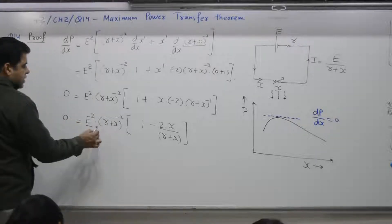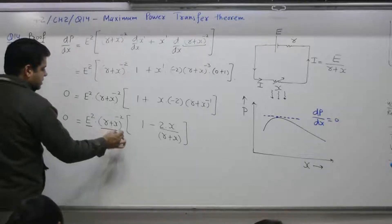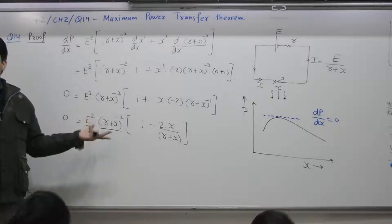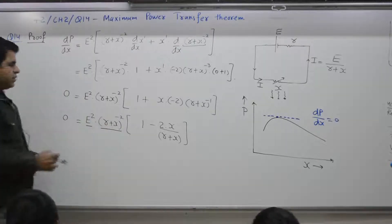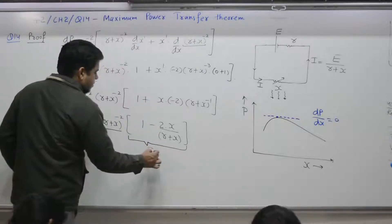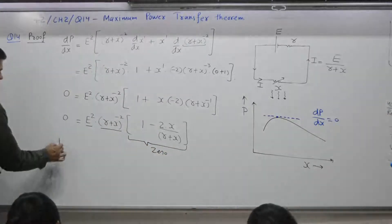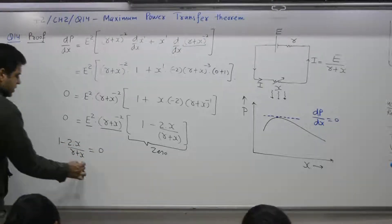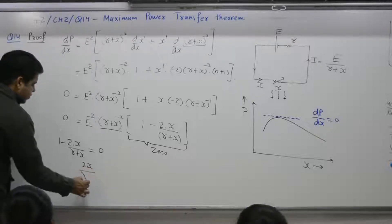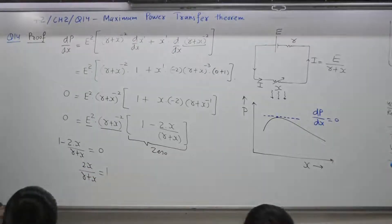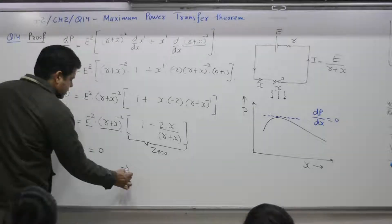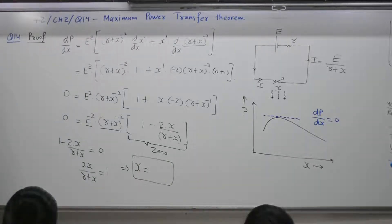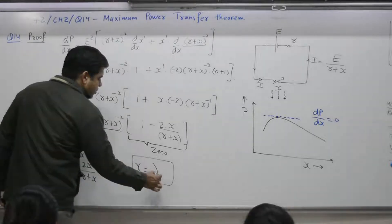E squared is a constant and (R plus X) squared is non-zero. The term (R plus X) to the power minus 2 can only be zero if X equals minus R, but X cannot be negative. So the bracket part must be zero: 1 minus 2X over (R plus X) equals 0, which means 2X over (R plus X) equals 1, which gives X equal to R.